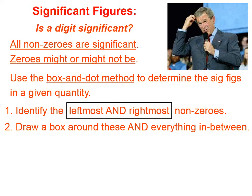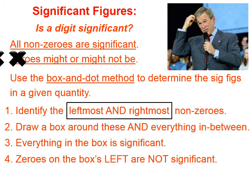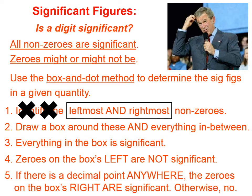Anything that is not in the box — anything on the left side of the box or anything on the right side of the box — is necessarily a zero. Everything that's in the box is significant. Zeros on the left are not significant. Zeros on the right are significant if there's a decimal point anywhere. If there's not a decimal point anywhere in that quantity, then those zeros on the right side are not significant.